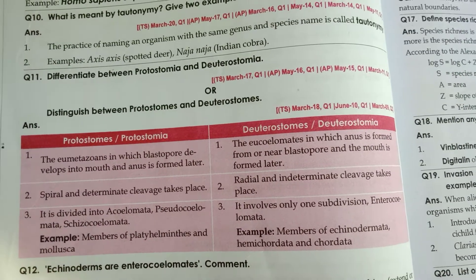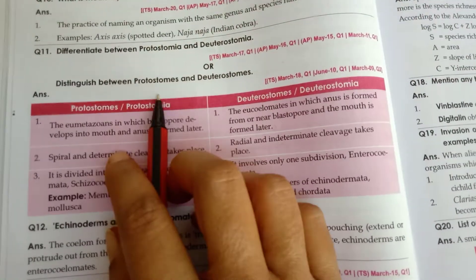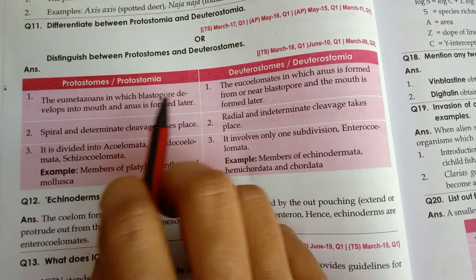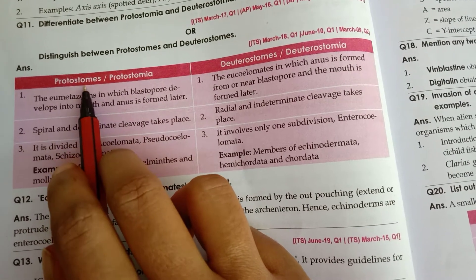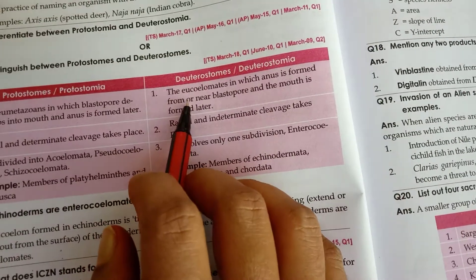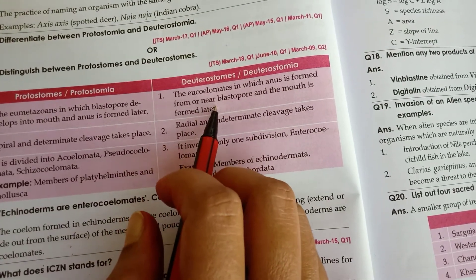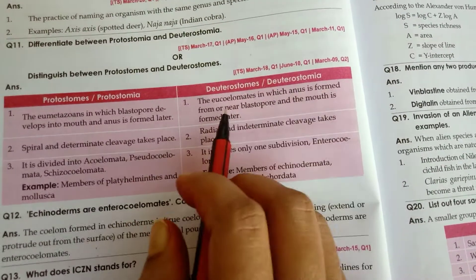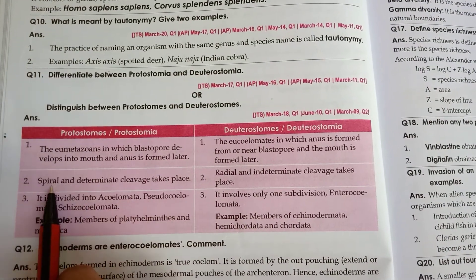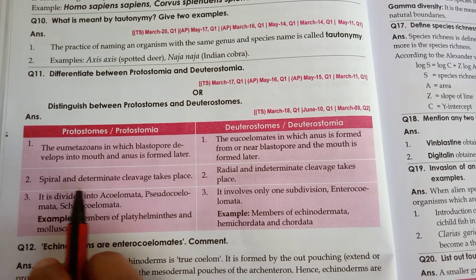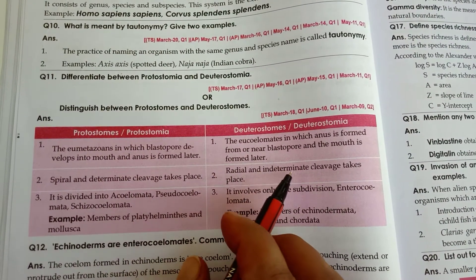Differentiate between Protostomia and Deuterostomia. Both are groups of metazoans. In Protostomia, the blastopore develops into the mouth first, with spiral and determinate cleavage. In Deuterostomia, the anus is formed first from or near the blastopore, and the mouth is formed later, with radial and indeterminate cleavage.